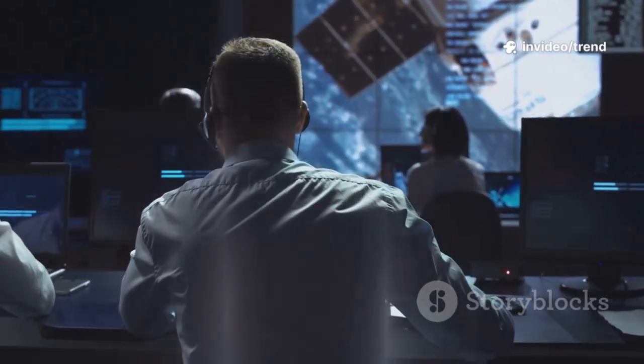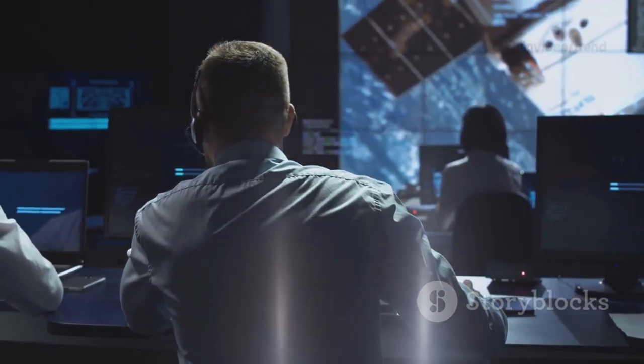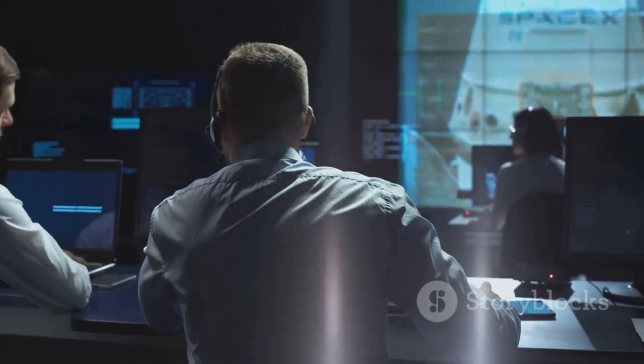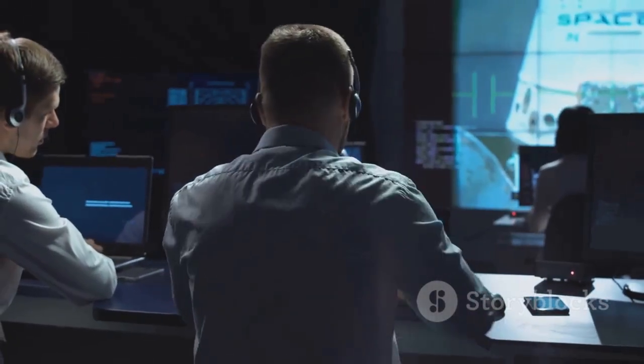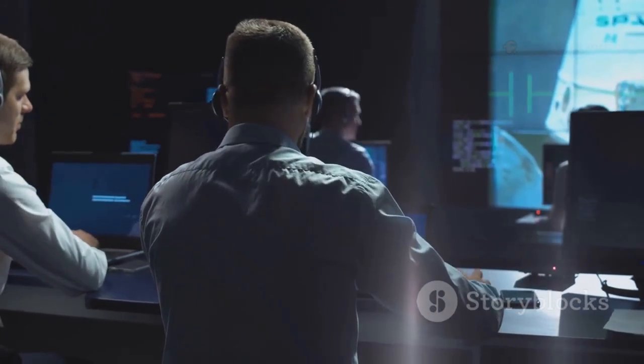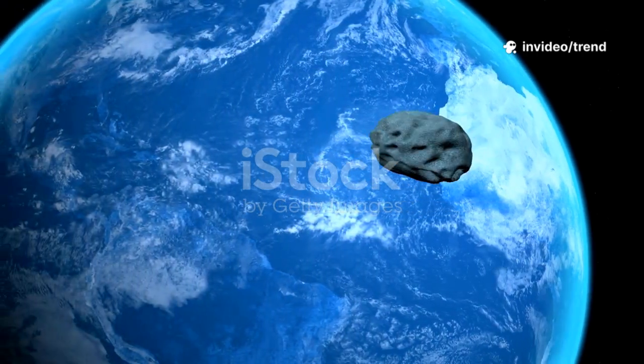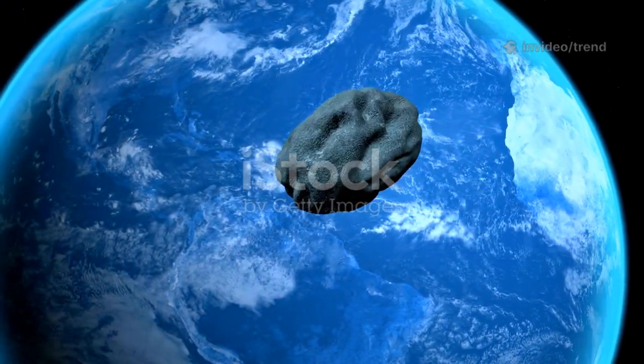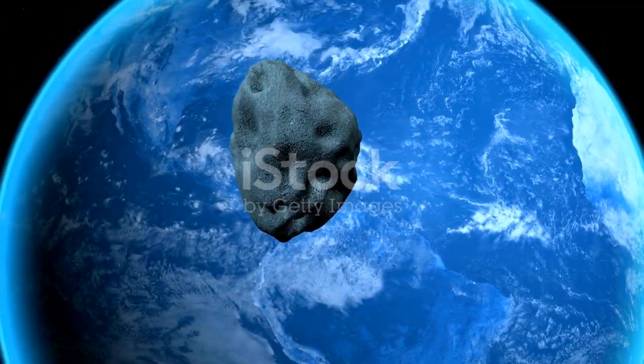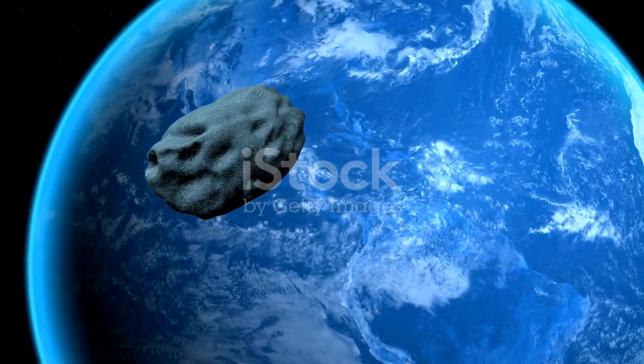When an asteroid is first discovered, its orbit is uncertain, a cone of possibility that stretches out into the future, shaped by the limited data astronomers have in those first crucial hours. For asteroid 2024 YR-4, that cone of uncertainty overlapped with Earth in 2032, raising immediate concerns among scientists and space agencies worldwide.